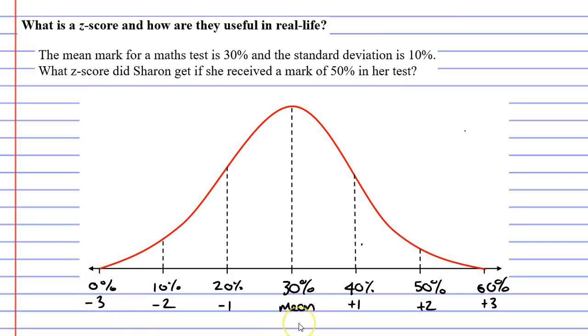What number do you think should belong under the mean? Well, the number that belongs under the mean is 0%, which makes sense because we've added the standard deviation zero times. We've added nothing to the 30%. These numbers that we've put here down the bottom are known as our Z-scores. So let's go back to the question.